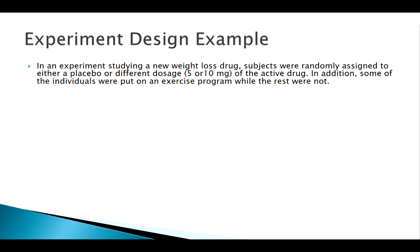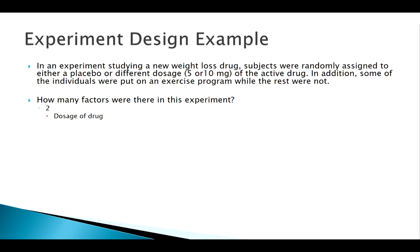Some people are going to get a prescribed exercise program and some people are not. So how many factors do we have here? Remember, factors are the variables — the characteristics, the things that we're changing. There are two factors here: the dosage of the drug they receive, and whether or not they're put on the exercise program.